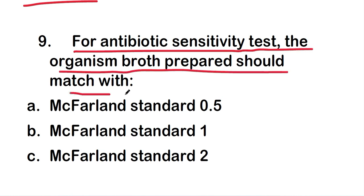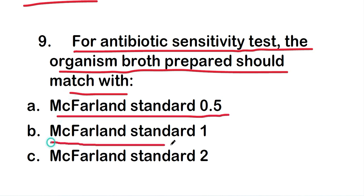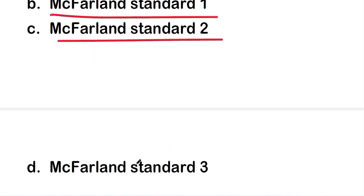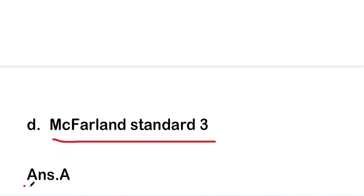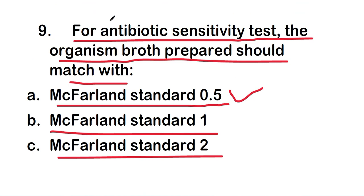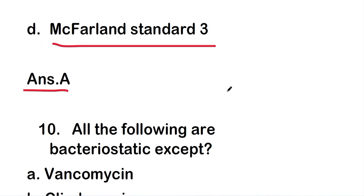The next question: for antibiotic sensitivity test, the organism broth prepared should match with McFarland standard 0.5, McFarland standard 1, McFarland standard 2, or McFarland standard 3. The right answer is option A — McFarland standard 0.5. For antibiotic sensitivity test, the organism broth should match McFarland standard 0.5.